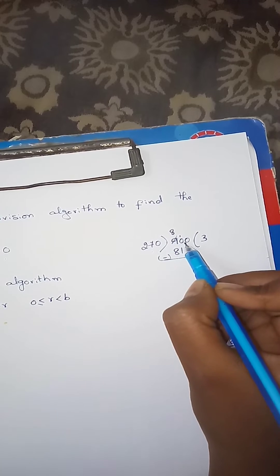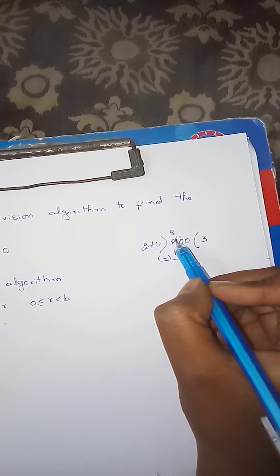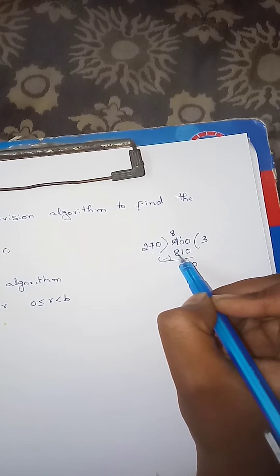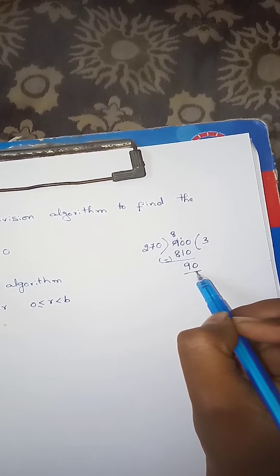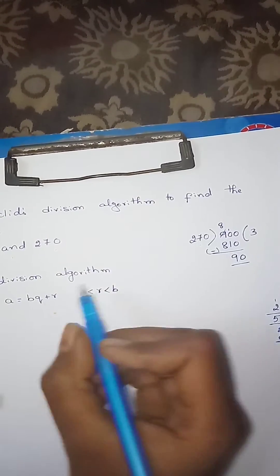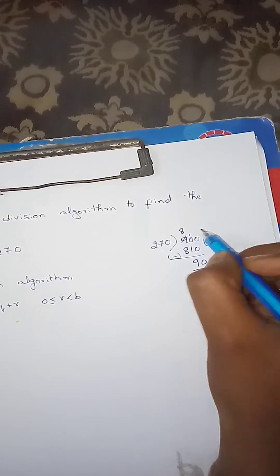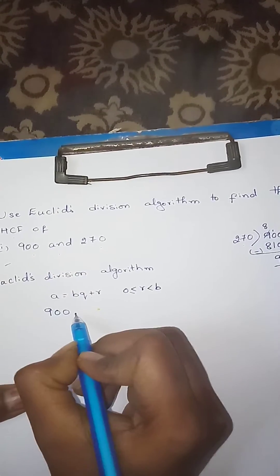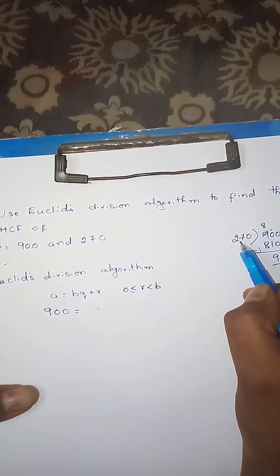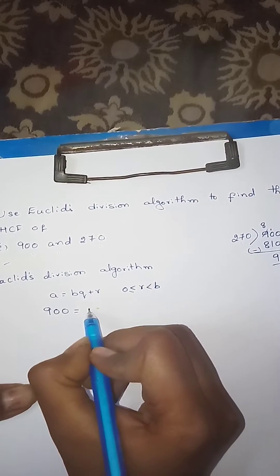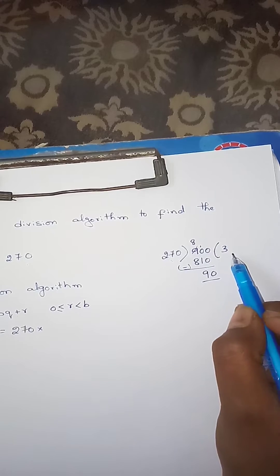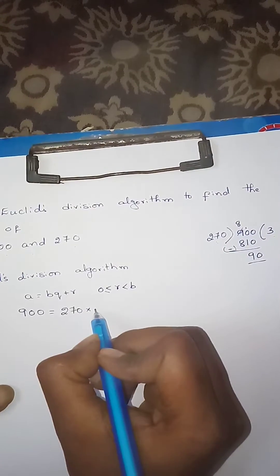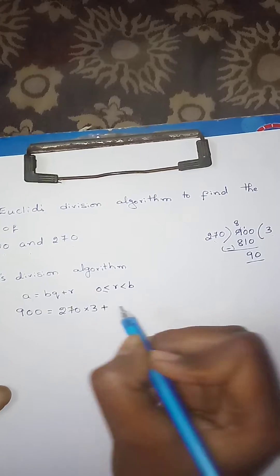Here the values are: 10, 8, 10, 9, 8, 0. What is 90? Here is 3, here is 9, here is 900. So A equals B: divisor 270 into quotient 3 plus remainder 90.